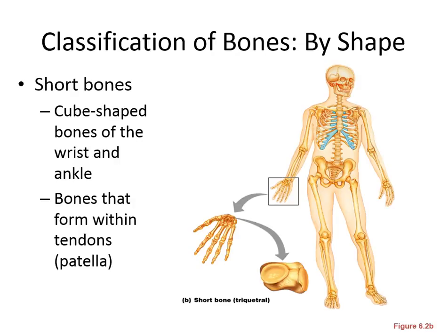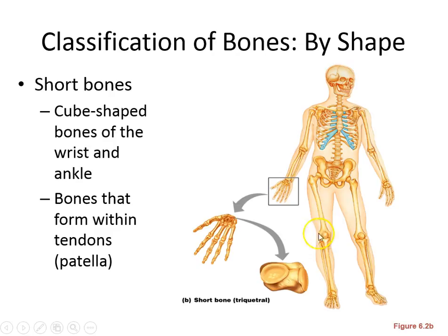Short bones are kind of square-shaped in general. Good examples are your carpals and tarsals — your wrist and ankle bones — as well as sesamoid bones, which are bones that form within tendons. An example of that would be your patella, your kneecap.